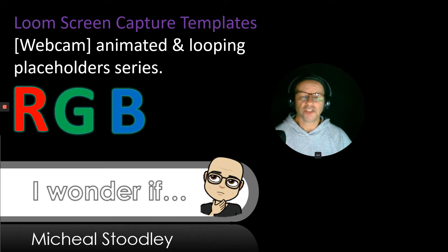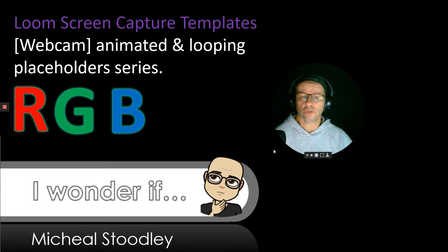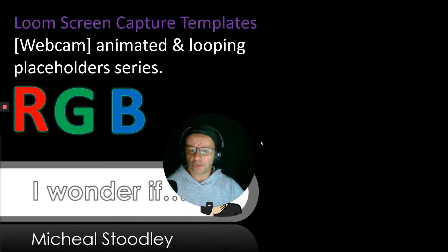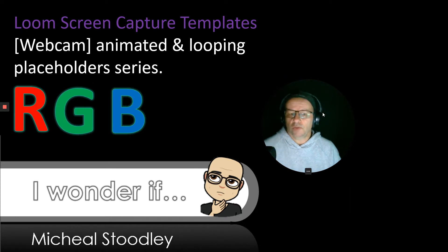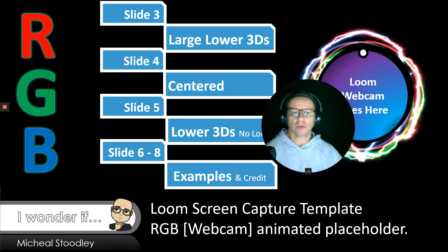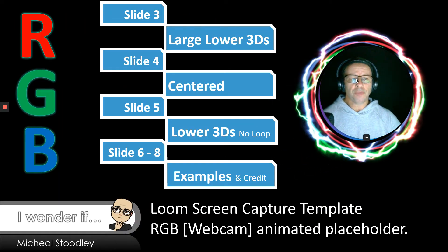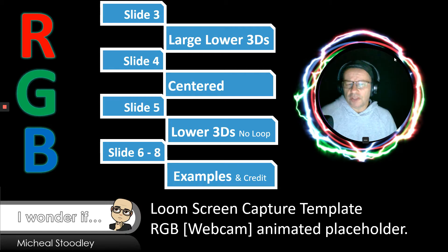I just want to show you my IGB placeholder that I've created for Loom. You can see that Loom puts you inside a circle, which is great, but I figured we could do something a little bit more dynamic than that. So I'm just going to tap through — I'm in PowerPoint at the moment. Basically what I want to do is put myself inside something like this.